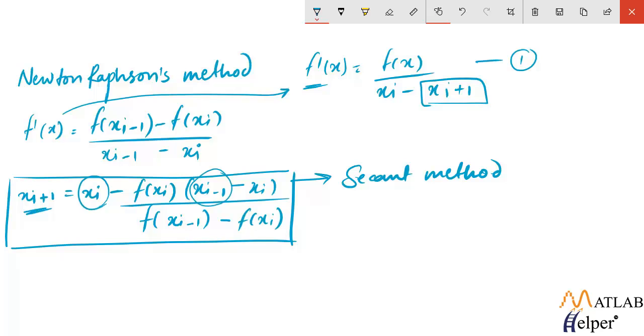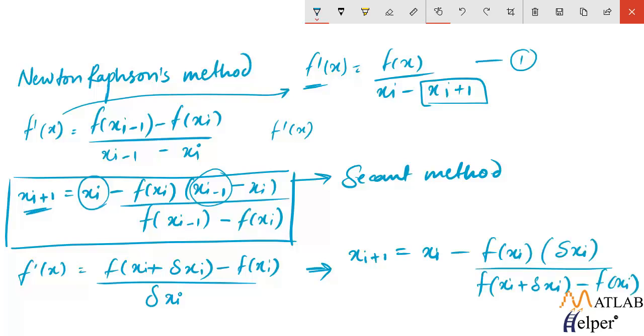Now instead of using these arbitrary values we can actually modify the equation of f' as shown here and this f' can later be solved to find the value of xi+1 and the equation turns out to be...